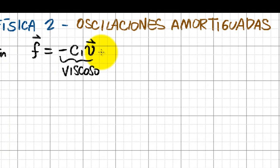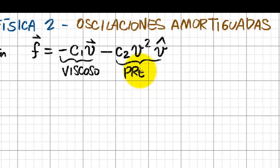There's a second term that goes as another constant, the square of the velocity or the square of the speed, in the direction of the velocity. Both terms are negative because the friction opposes the movement, and this is called the pressure term.